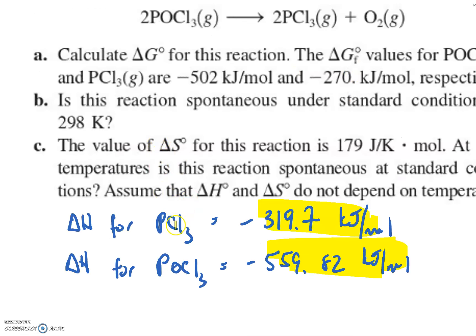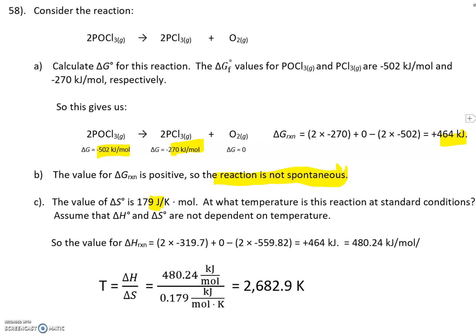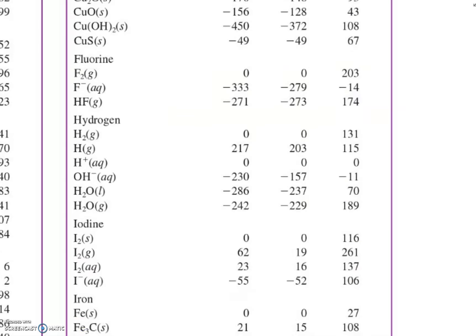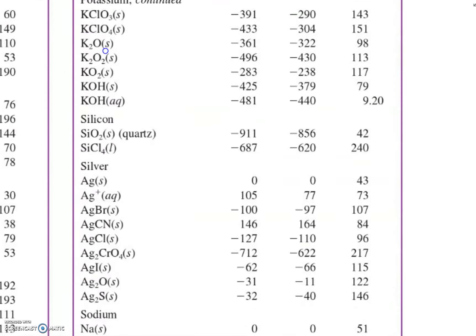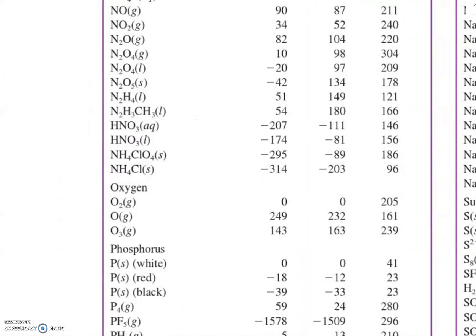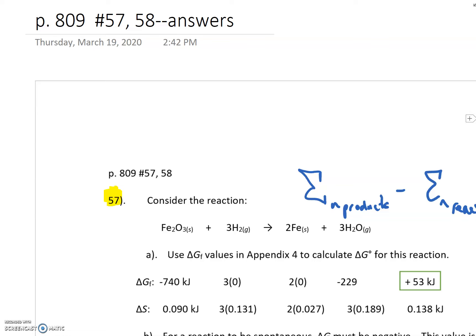So PCO3, that's a product. POCO3, that's a reactant. So it's products minus reactants. There's our PCO3. We know the delta G of anything elemental is always zero. And if you don't believe me, where's our oxygen? And delta G for any elemental is always zero. Okay? So that's how I got that.